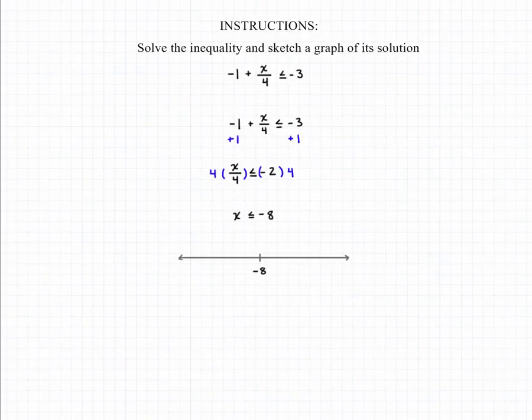So we're going to draw a filled in circle to indicate that we're including the negative 8. Because X is also less than negative 8, we want to include all the values that are less than negative 8, meaning we're going to draw our arrow to the left. And those two pieces together will give us our final answer.